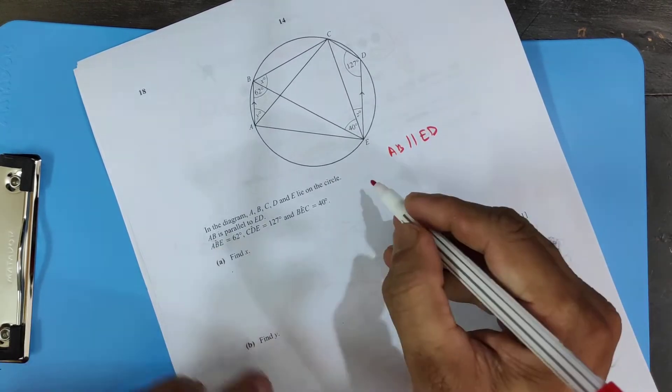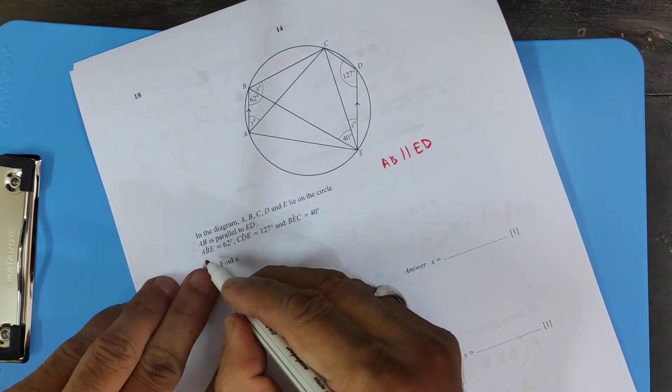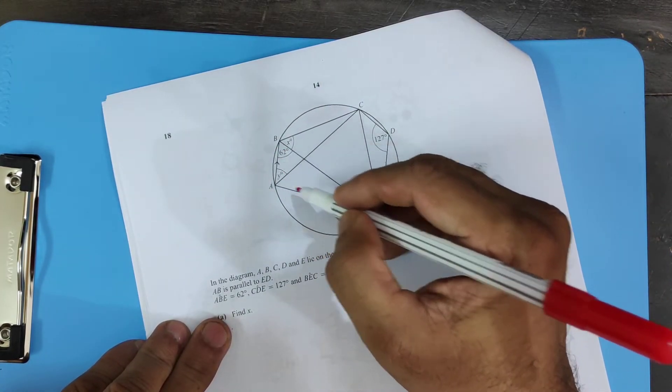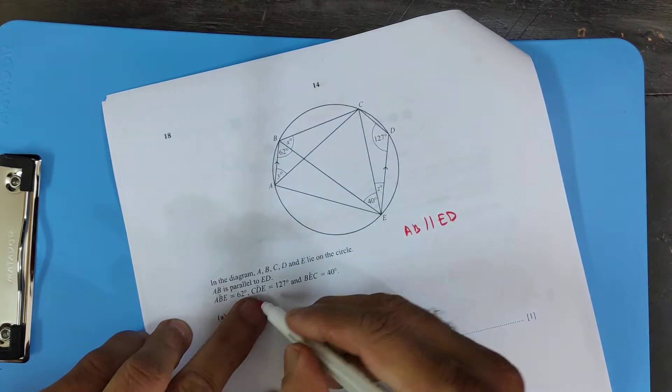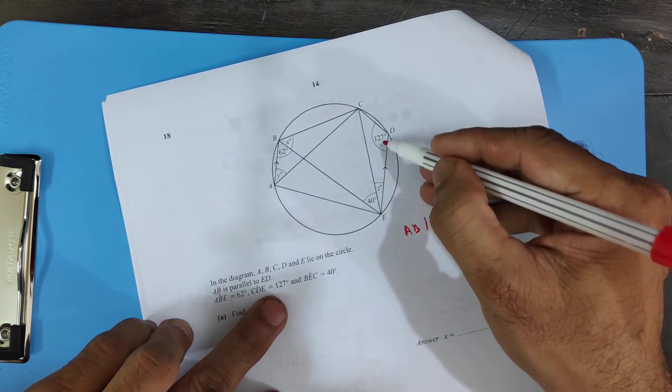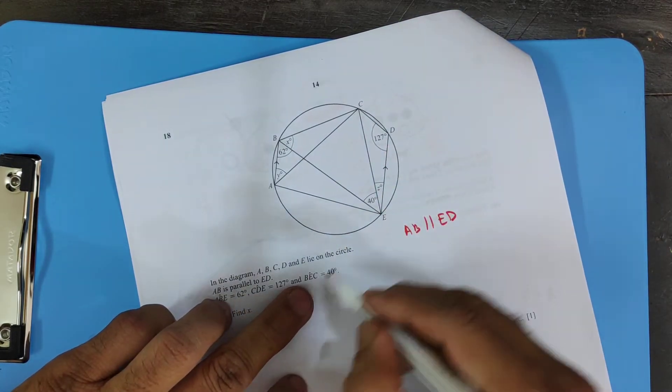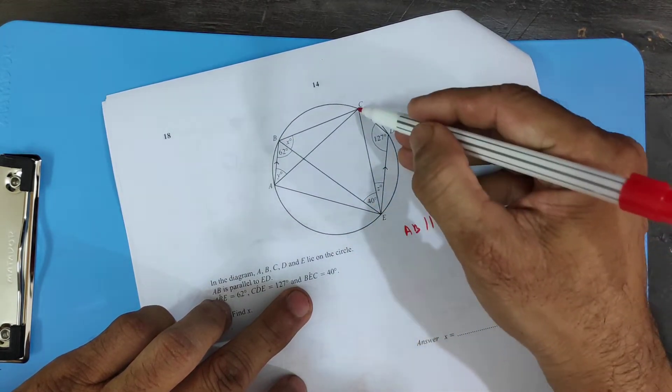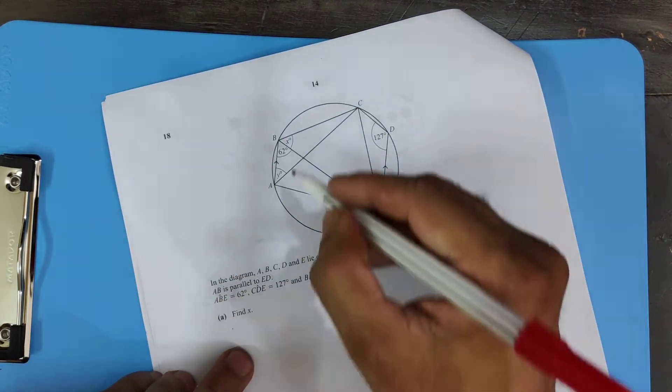Angle a b e, that's 62 degrees. C d e equals 127. And b e c is 40 degrees. Find x. X is over here.